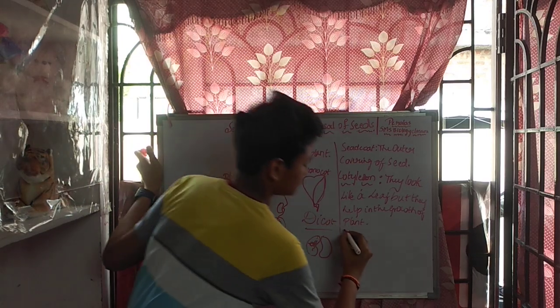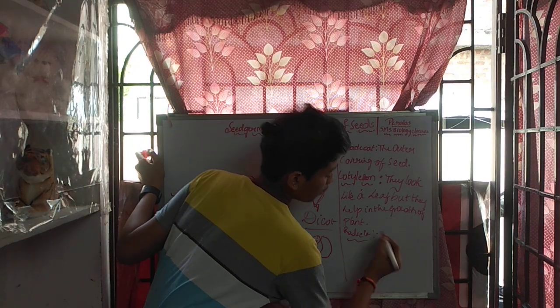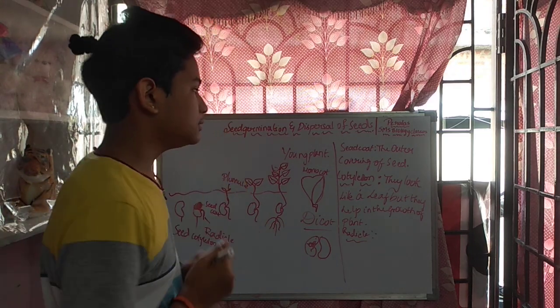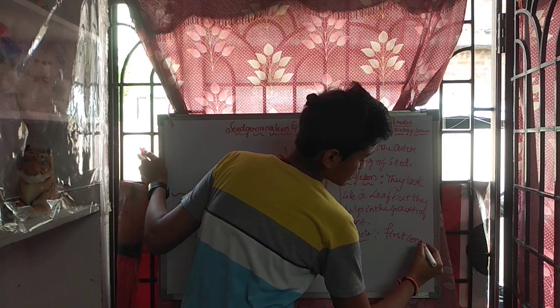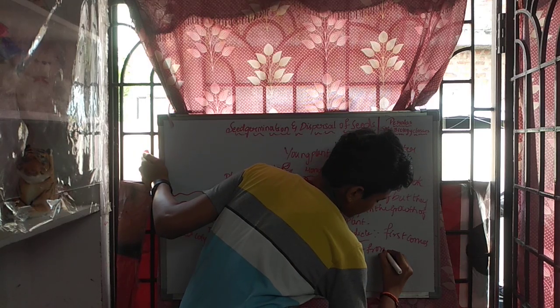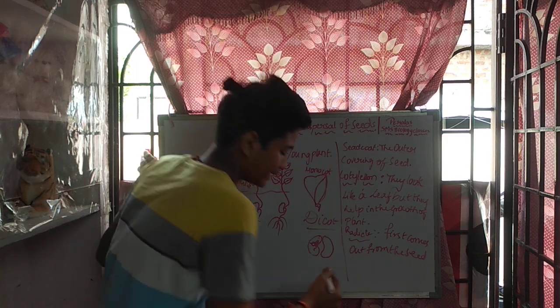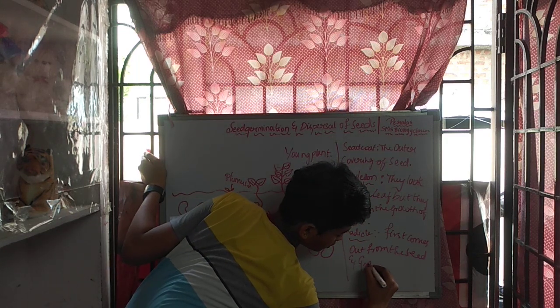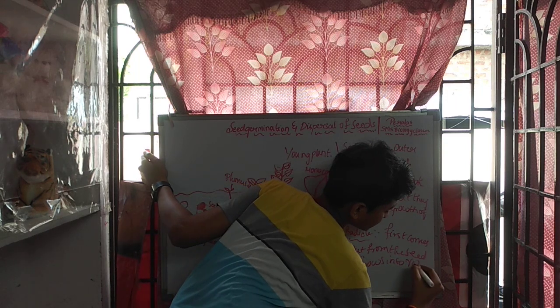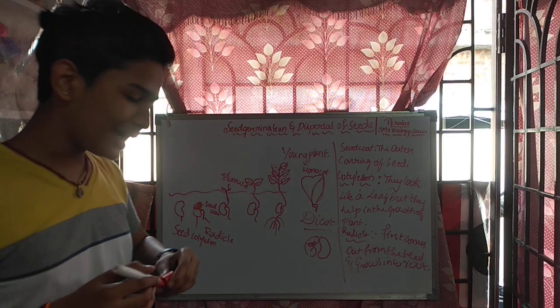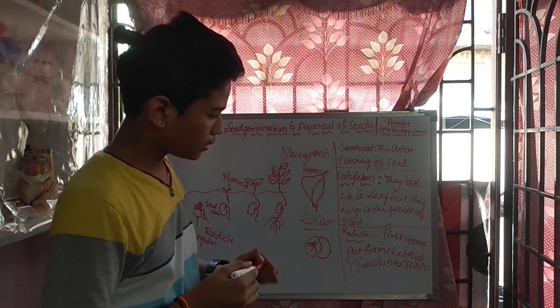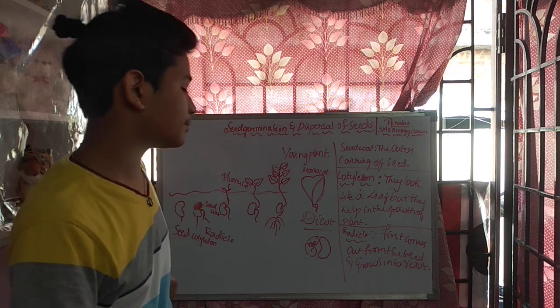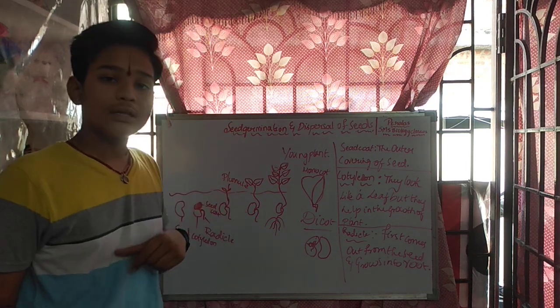Next is the radicle. What is the radicle? The radicle first comes out from the seed and grows into the root. In the same way, the plumule comes second from the seed and develops into the shoot.